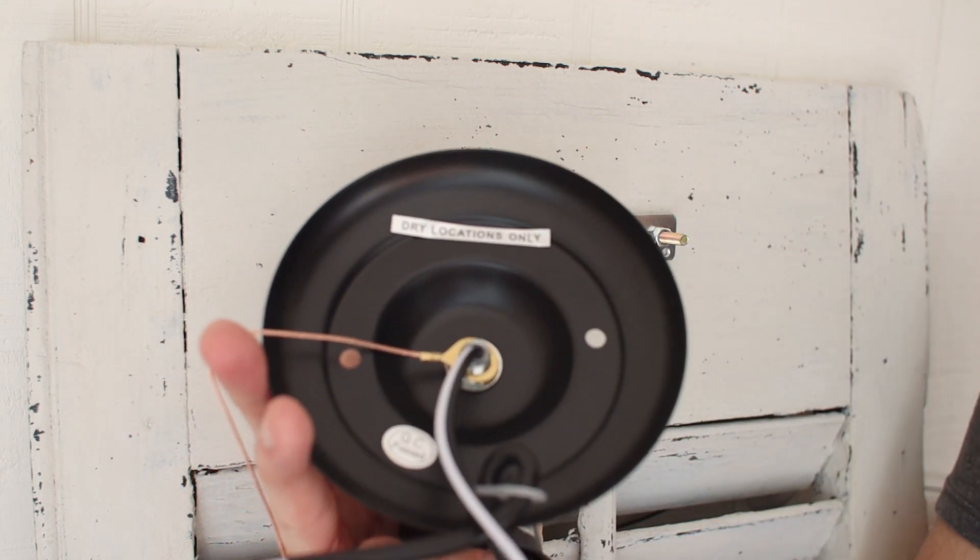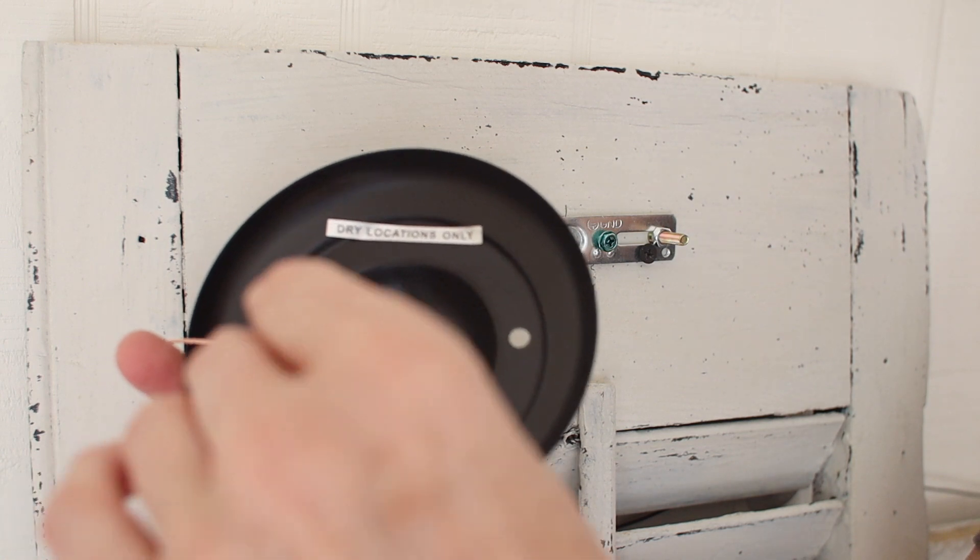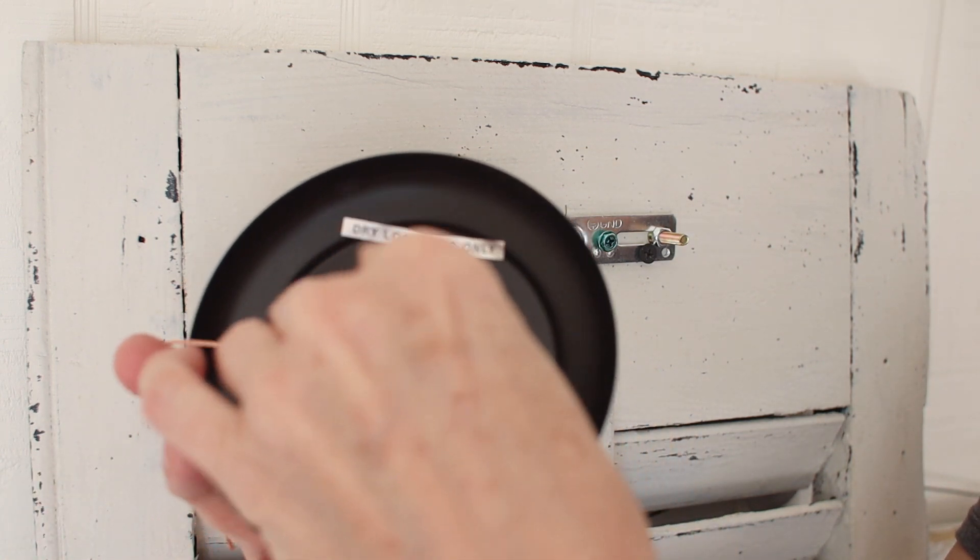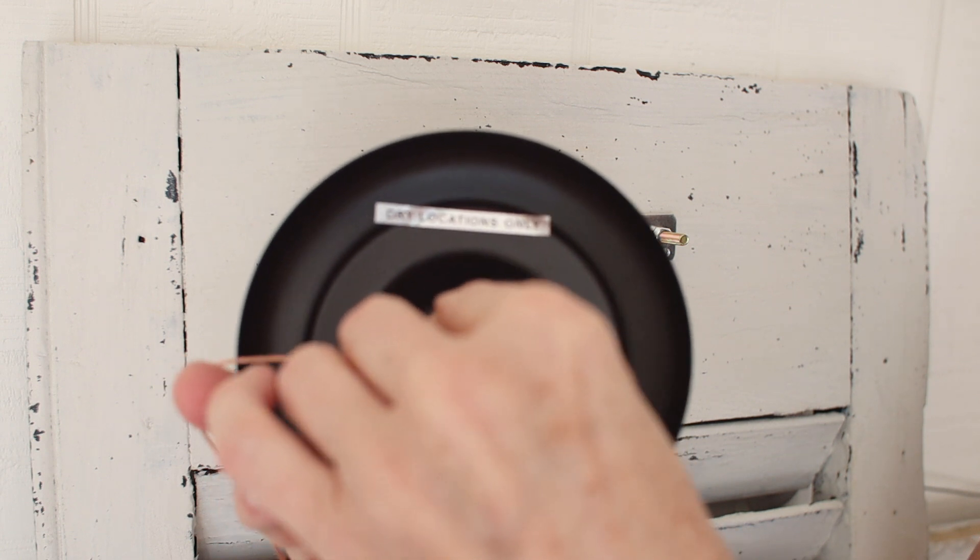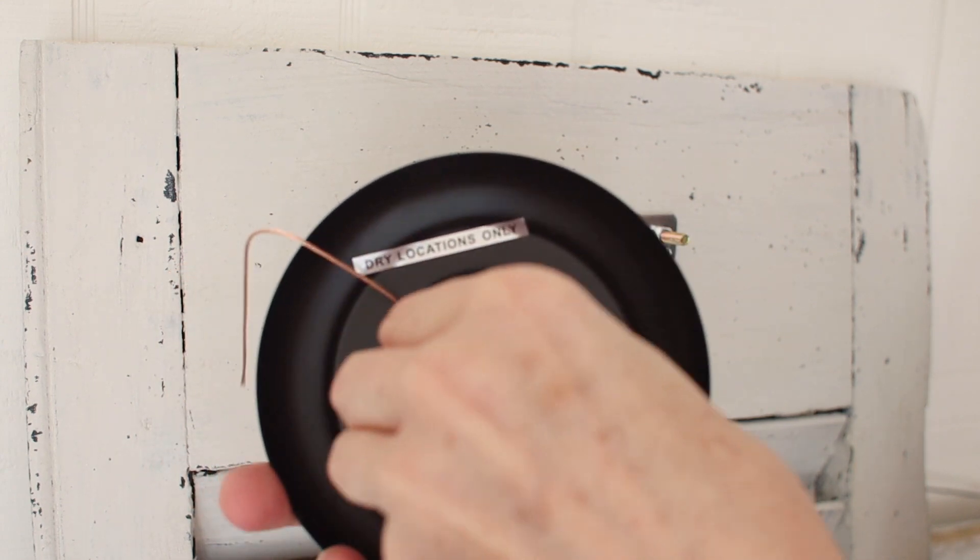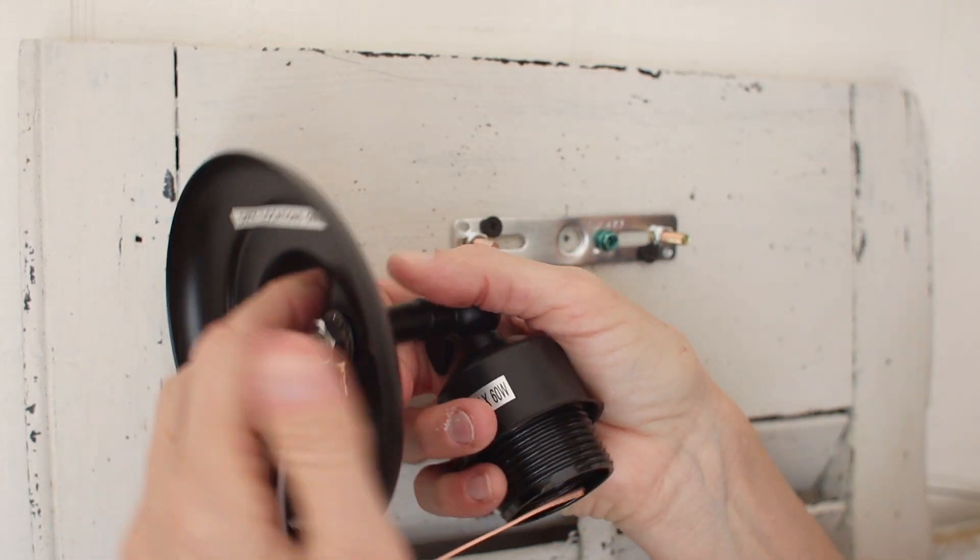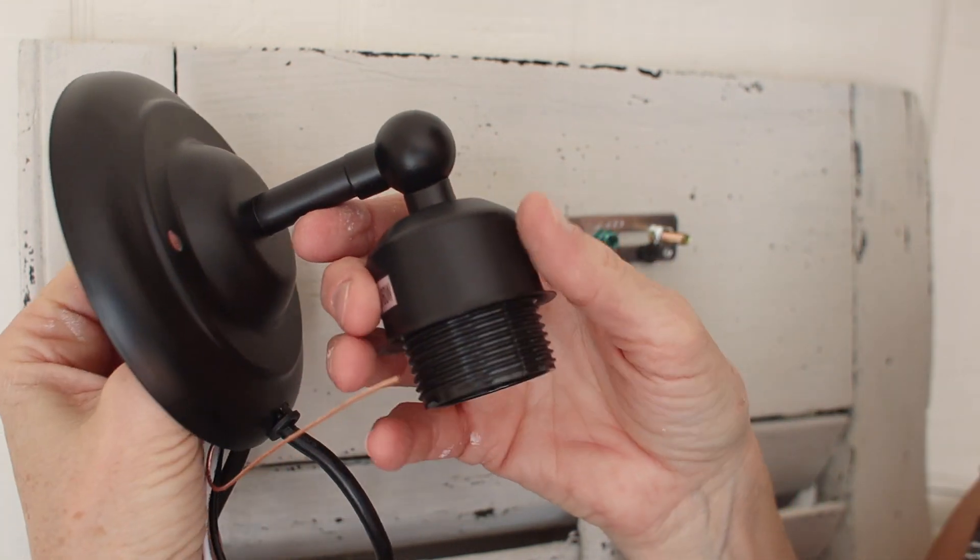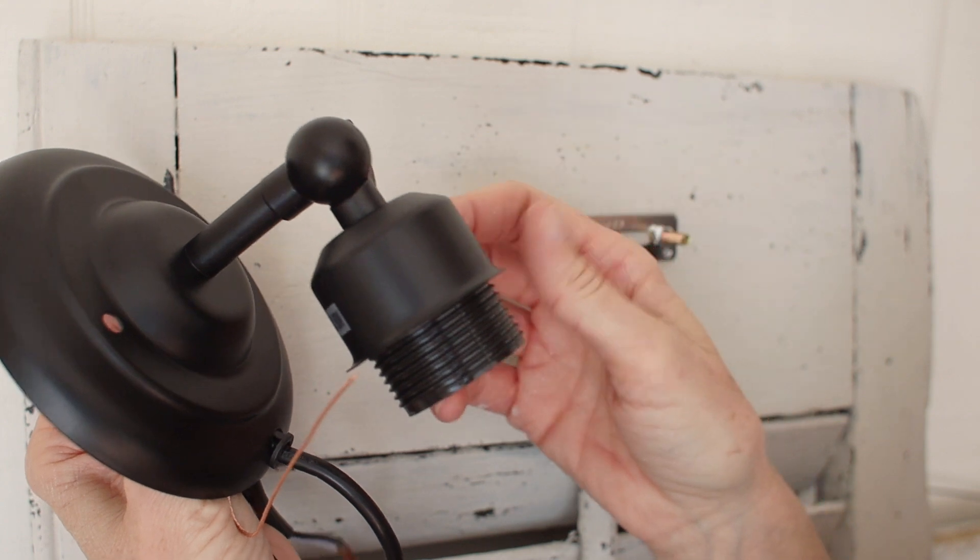And then I'm going to attach the nut that'll hold that ground wire on there. This is a safety precaution. The ground wire is a safety feature so that if anything shorted out, it would just blow the circuit breaker rather than spark up on the inside here. Get that nice and snug there.